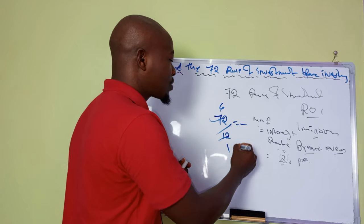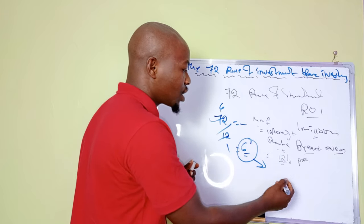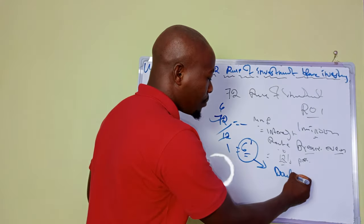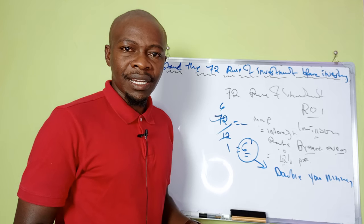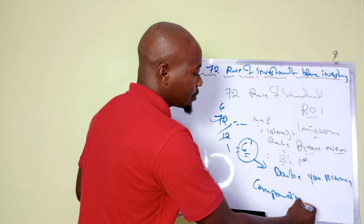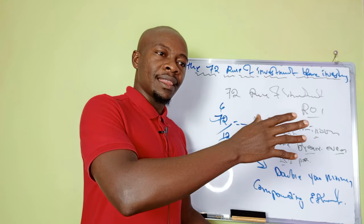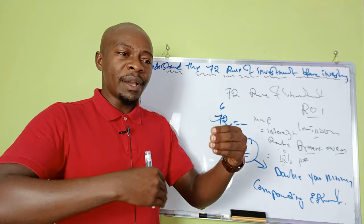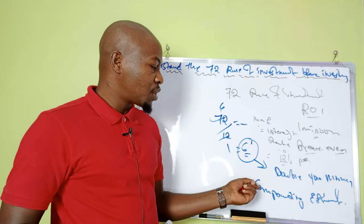If you divide 72 by 12, this gives you 6. So it takes 6 years — this magical figure of 6 — this is how long it will take you to double your money. Not just to recoup back, but to actually double your money. In other words, it simply means when will I get my money back. There's something we discussed called compounding effect — where your money is giving birth to money that gives birth, and in that process there's a snowball effect whereby it becomes bigger and bigger as time goes.